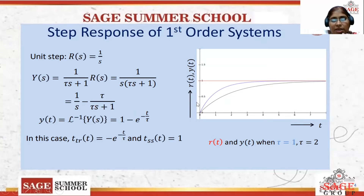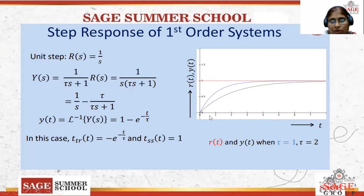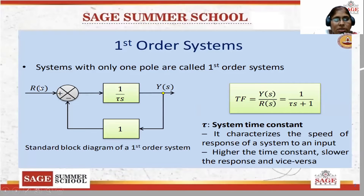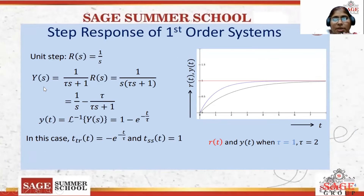If step input is given — this red line shows the unit step function — the unit step function u(t) equals 1 for t equal to 0 and for all t greater than 0. This constant value of 1 is denoted by the red line. If this unit step input is given to the first order system, the output increases slowly but reaches steady state after some time.